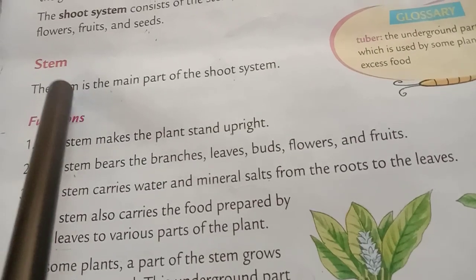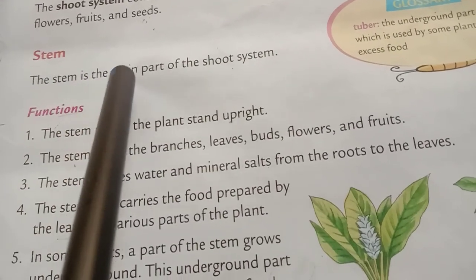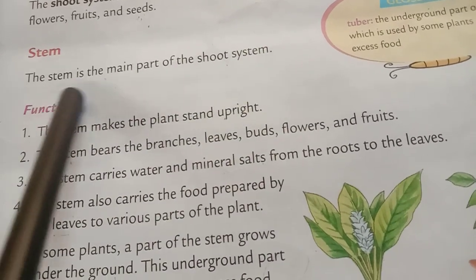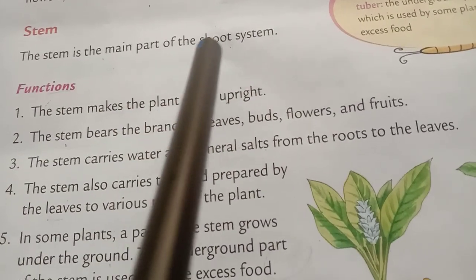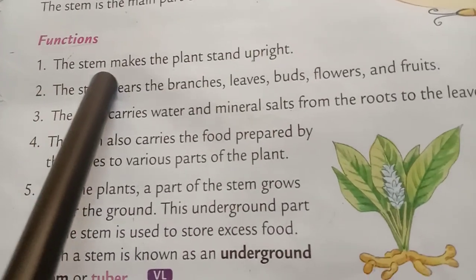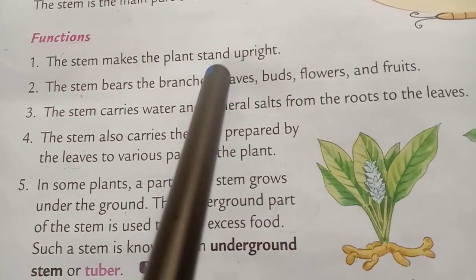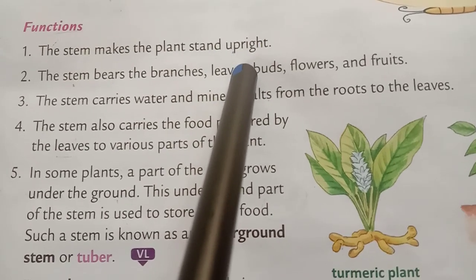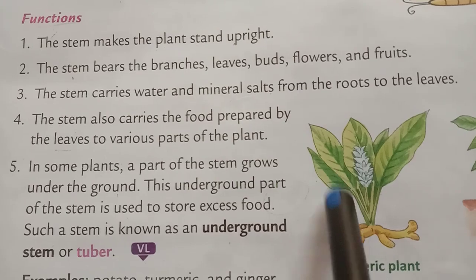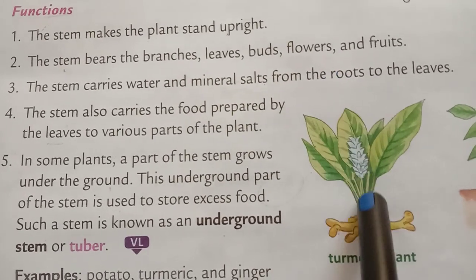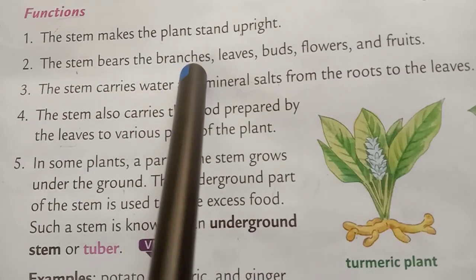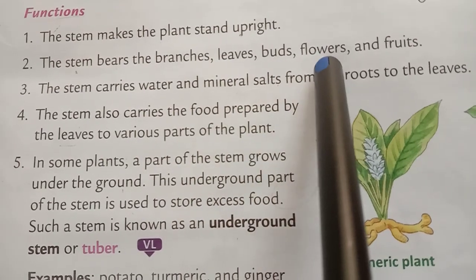We'll start with the stem. The stem is the main part of the shoot system. What are the functions of stems? The stem makes the plant stand upright. The stem bears the branches, leaves, buds, flowers and fruits.